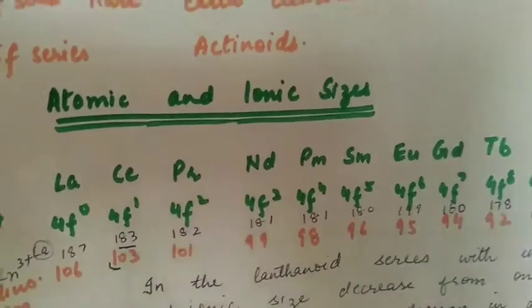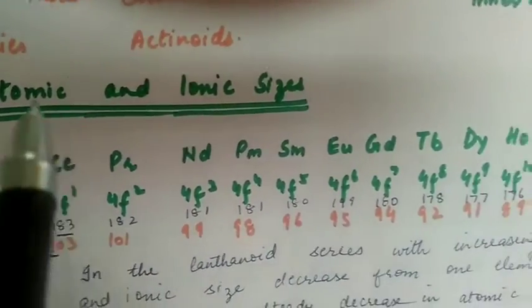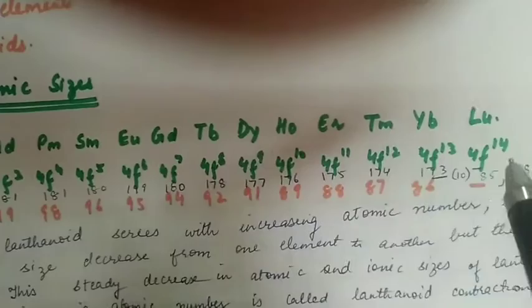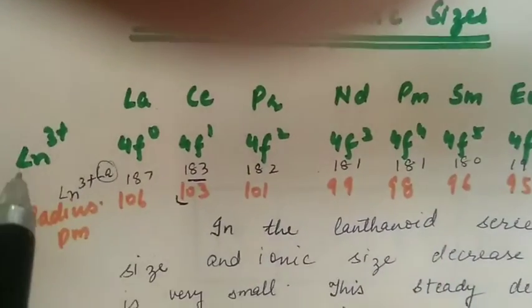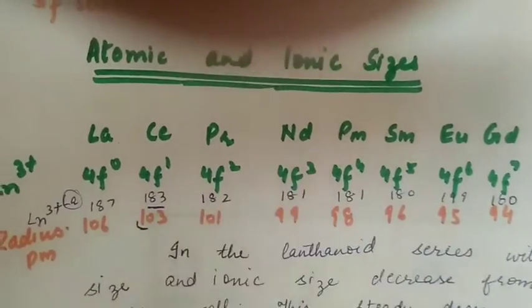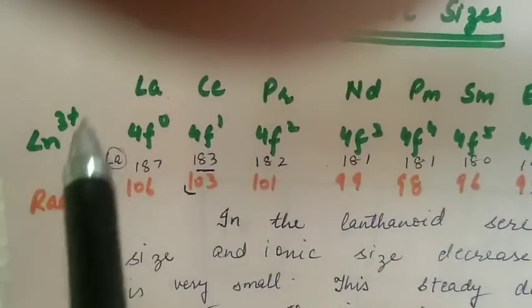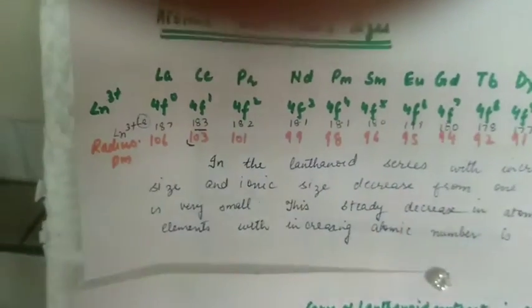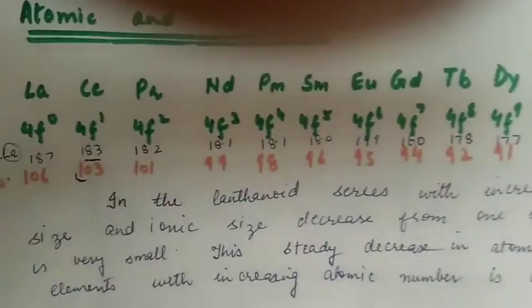The first property after electronic configuration is atomic and ionic size. We have placed the elements of 4f group lanthanoids over here and also written the configuration of lanthanide 3+ ions. Atomic radius shows irregularity in atoms, but if you observe ionic radius, it regularly decreases.